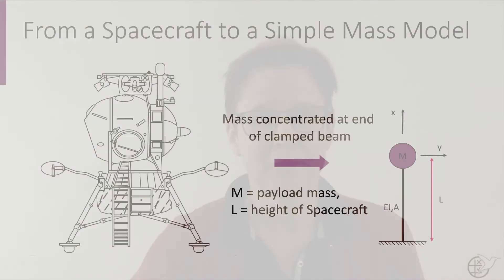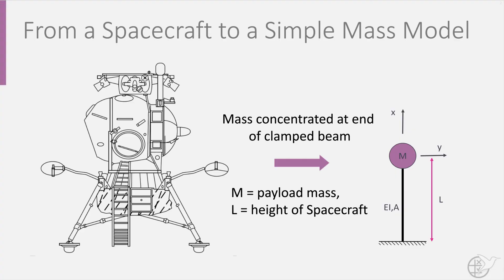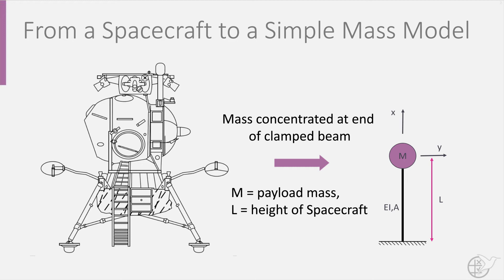Many satellites can simply be modelled as a concentrated mass at the end of a clamped beam. M is the mass of the payload of your spacecraft and L the height of the spacecraft. The beam in practice is often a thin-walled cylinder whose mass is much less than the payload on top, which is why the mass of the cylinder — or bus as it is known — is neglected. The beam will have a stiffness EI and a cross section A. We can now define a simple single degree of freedom system involving a mass m and a spring, with one system in the axial direction and one in the lateral direction, each with their corresponding stiffness kx and ky.